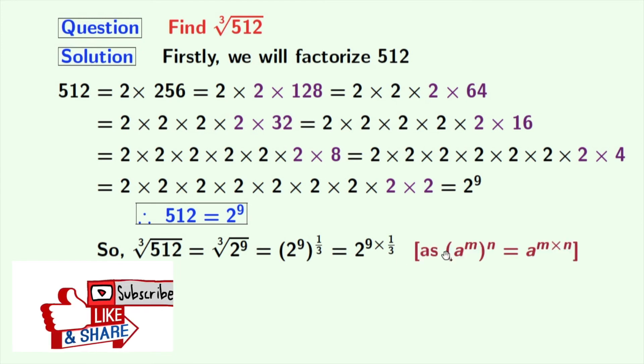Using the rule of a power m whole power n is equal to a power m times n. Here, a stands for 2, m stands for 9, and n stands for 1 by 3. Now simplifying the power we get 2 power 3 that is equal to 8.